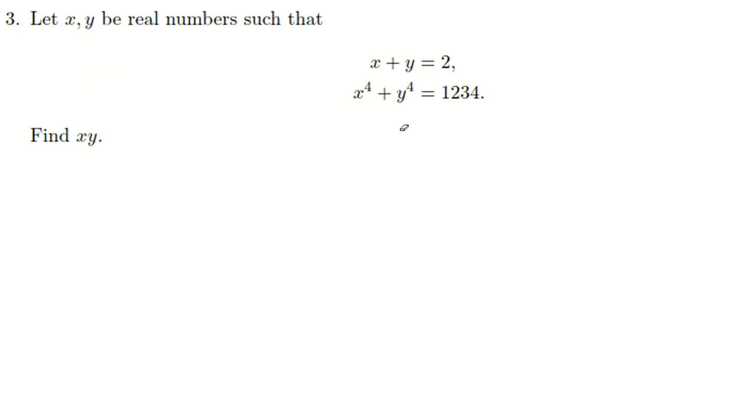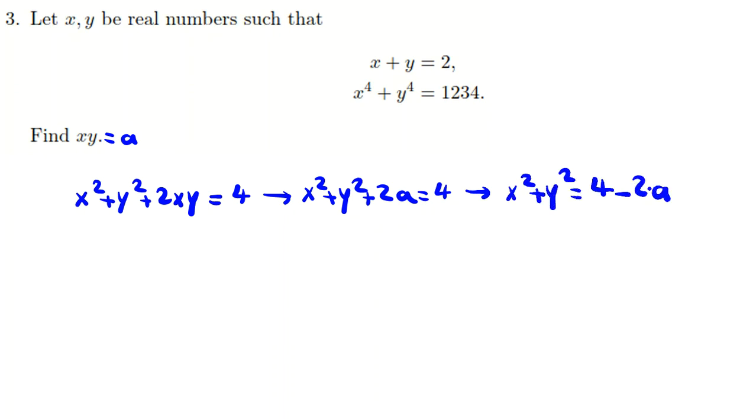From the first equation, if we raise it to the power of 2, then we have x squared plus y squared plus 2xy equals 4. So if we consider xy equals a, we can conclude x squared plus y squared plus 2a equals 4. So x squared plus y squared equals 4 minus 2a.